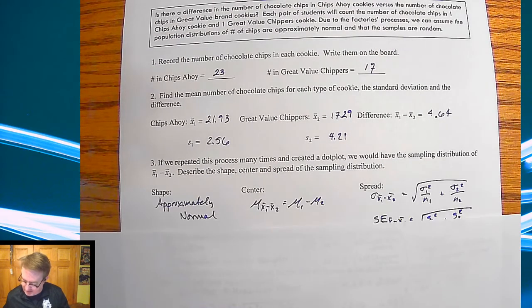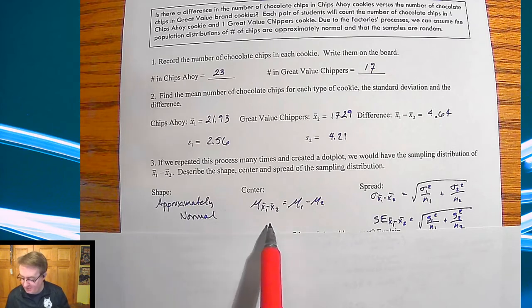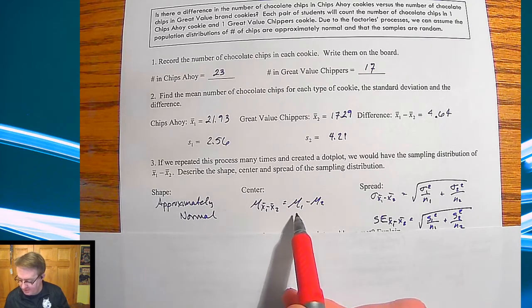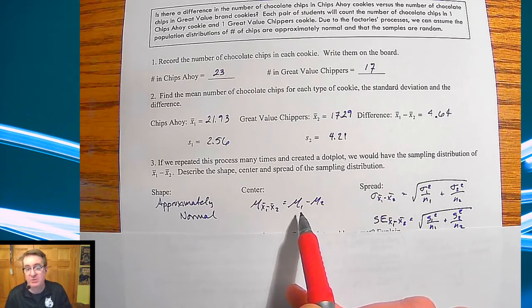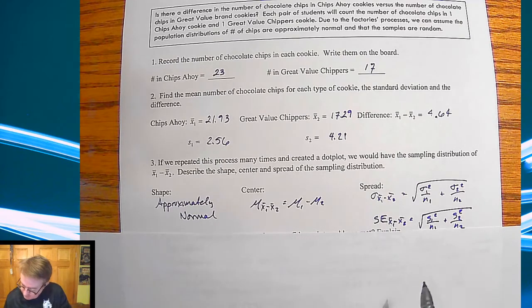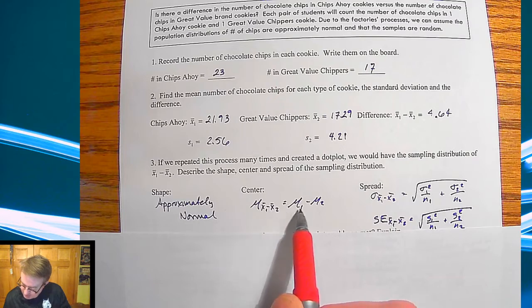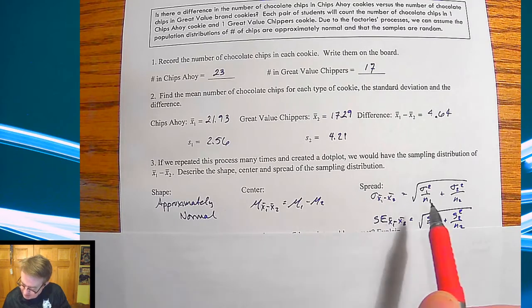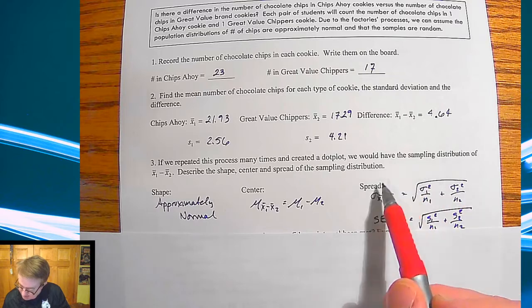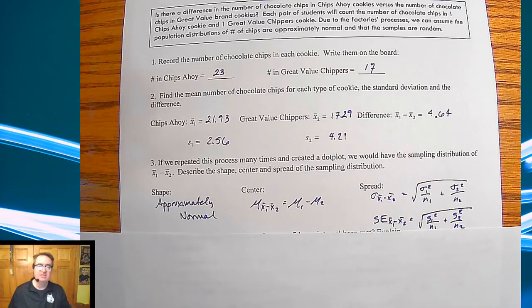And then down here, so the shape was approximately normal. My center is going to be normally the difference of, typically what we've done has always been the difference of the two population means. And then over here, so what we're going to do is we're going to use that estimate of the difference between the two as the difference between the two means. And then over here, what we'll have is that here is the typical standard deviation one. So our standard error, much like what we've done before, is going to be set up like that.